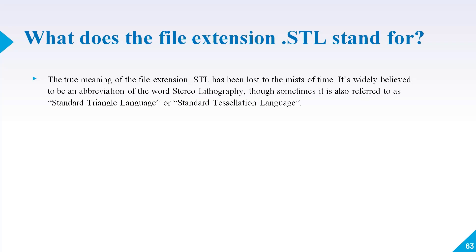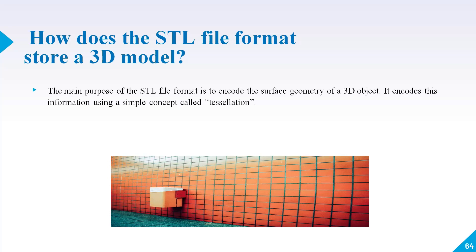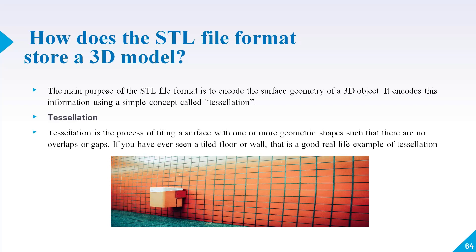How does the STL file format store a 3D model? The main purpose of the STL file format is to encode the surface geometry of a 3D object. It encodes this information using a simple concept called tessellation. Tessellation is the process of tiling a surface with one or more geometric shapes such that there are no overlaps or gaps. If you have ever seen a tiled floor or wall, that is a good real-life example of tessellation.